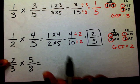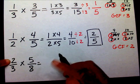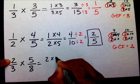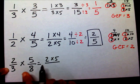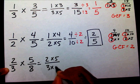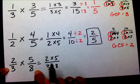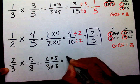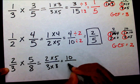We're going to multiply our numerators, which is two times five, and our denominators, which is three times eight. Two times five is ten. Three times eight is twenty-four.